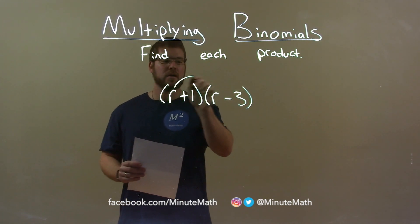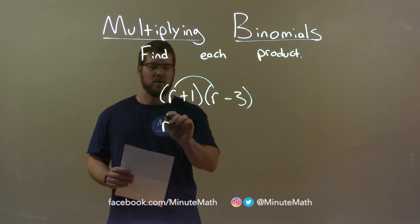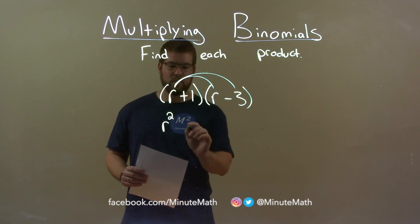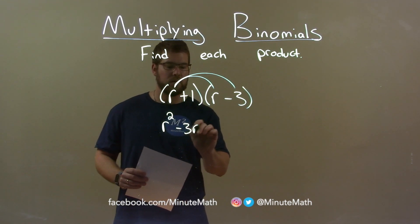So r times r is r squared. r times minus 3 is minus 3r.